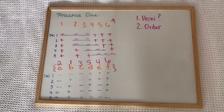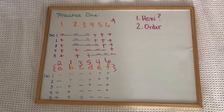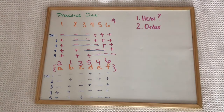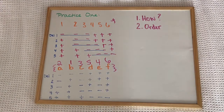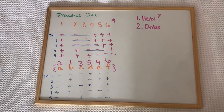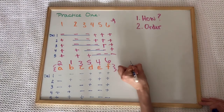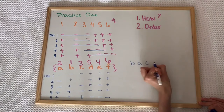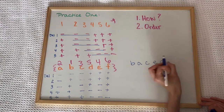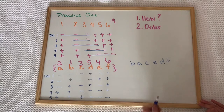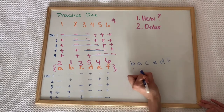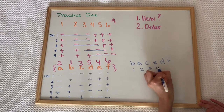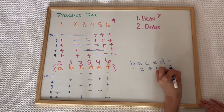So now that we have that, we have actually discovered the correct order for these letters. We can spell it out — the correct order will be B, A, C, E, D, F, and that corresponds to positions 1, 2, 3, 4, 5, 6.